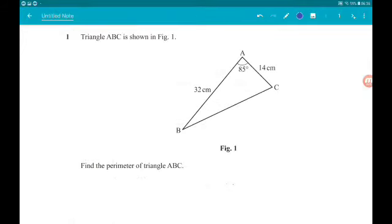Ok, question 1 with 3 marks, we have triangle ABC shown in figure 1. We want to find the perimeter of triangle ABC.